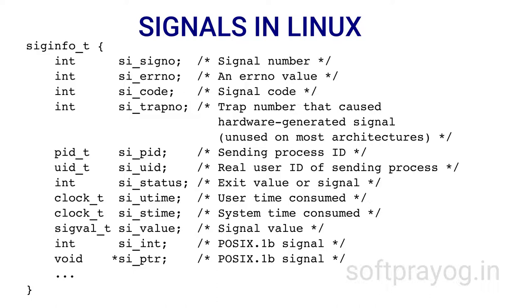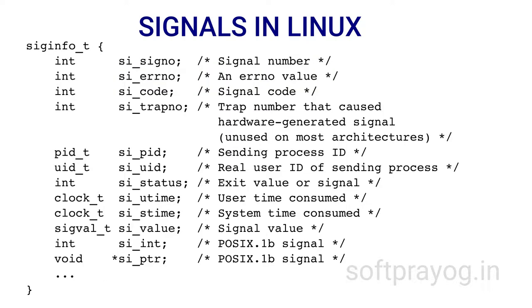The second parameter is a pointer to typedef siginfo_t. The members si_signo, si_errno, and si_code are defined for all signals. si_signo is the signal number; si_errno is generally unused in Linux; si_code gives the reason for the signal. If si_code is SI_USER, the signal was sent via a kill system call. If SI_KERNEL, the signal was sent by the kernel. If SI_QUEUE, via a sigqueue function call. If SI_TIMER, a POSIX timer has expired. If SI_ASYNCIO, asynchronous I/O has completed. If SI_MESGQ, a message arrived on an empty message queue with an mq_notify registration. The si_value union can be an integer (si_int) or pointer (si_ptr) carrying an application-defined code.